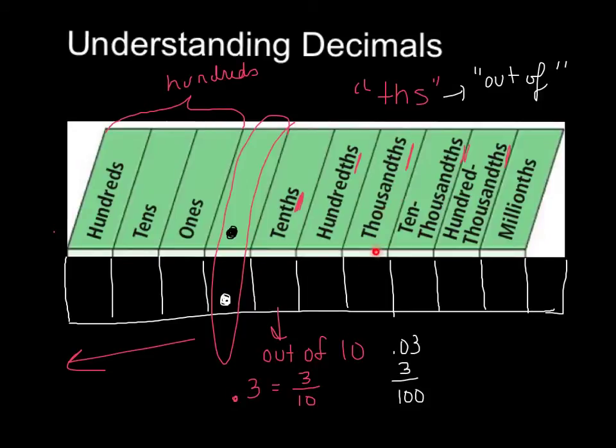Next place is the thousandths. Pay attention to the THS at the end. That means out of a thousand. Then out of ten thousand, out of hundred thousand, out of a million. Then it would start all over with the next section. So basically, these sections kind of get grouped together.